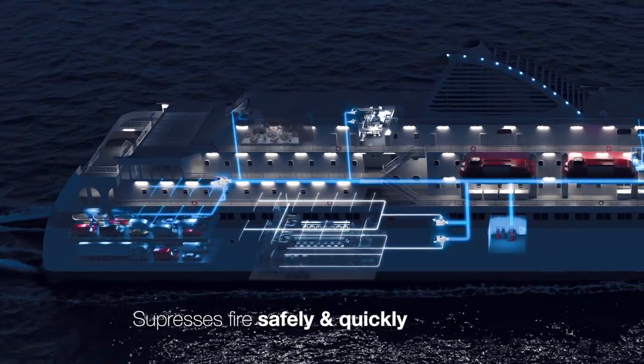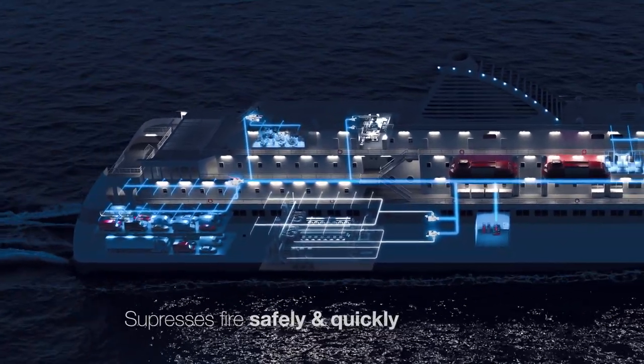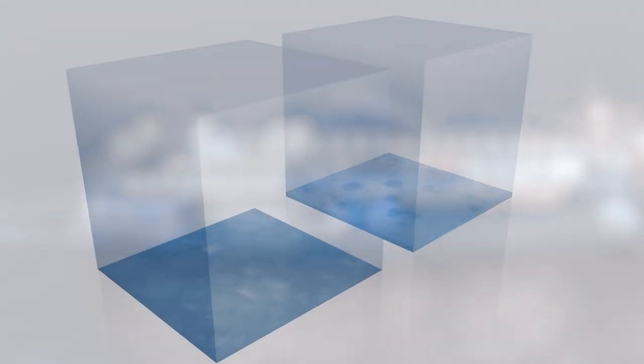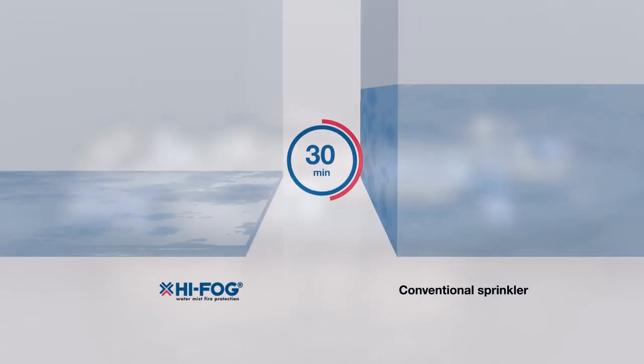High Fog uses a fine water mist at high velocity to suppress fire safely and efficiently. Using significantly less water than conventional sprinkler systems, High Fog keeps damage after activation to a minimum, saving your time and property.